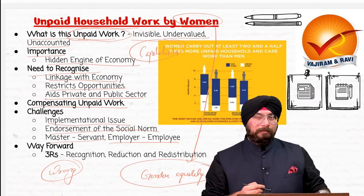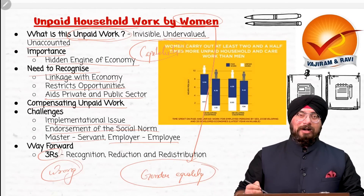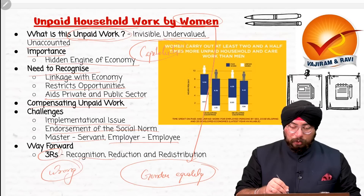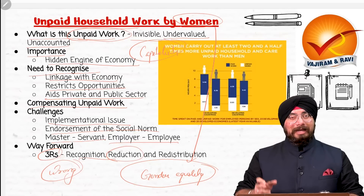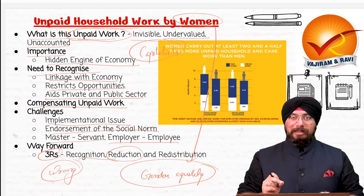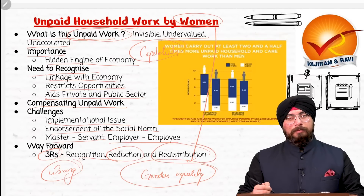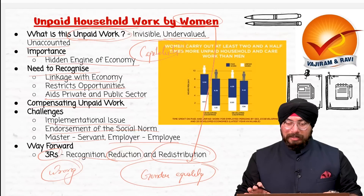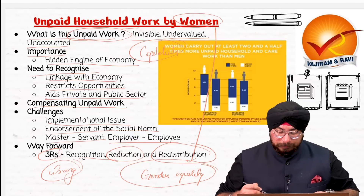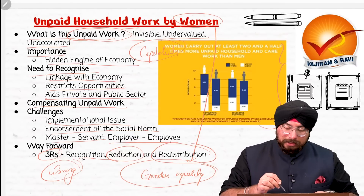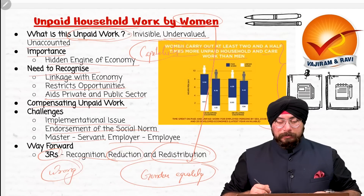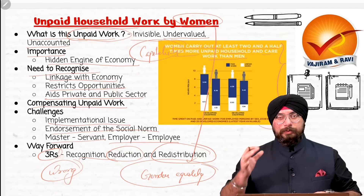What should be the way forward? We need to follow the three R's: first, recognize the unpaid household work done by women. Then reduce the burden on women and have gender equality and gender parity. Then redistribute — it needs to be shared equally among men and women. In this chart, women carry out at least two and a half times more unpaid household and care work than men, which shows the same picture we are talking about.